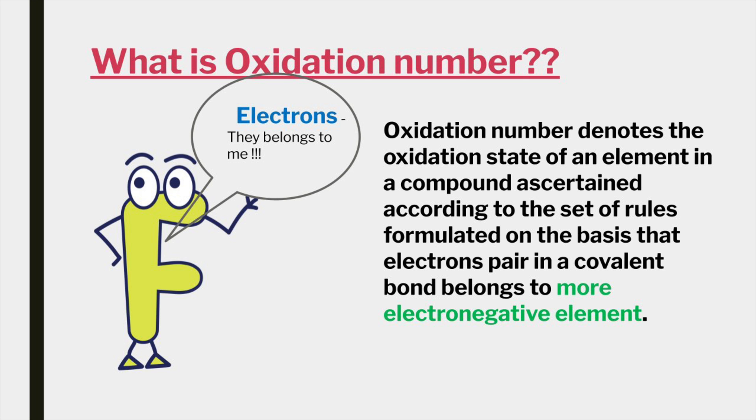First, let us see what is oxidation number. Oxidation number denotes the oxidation state of an element in a compound ascertained according to a set of rules formulated on the basis that electron pair in a covalent bond belongs to more electronegative element.